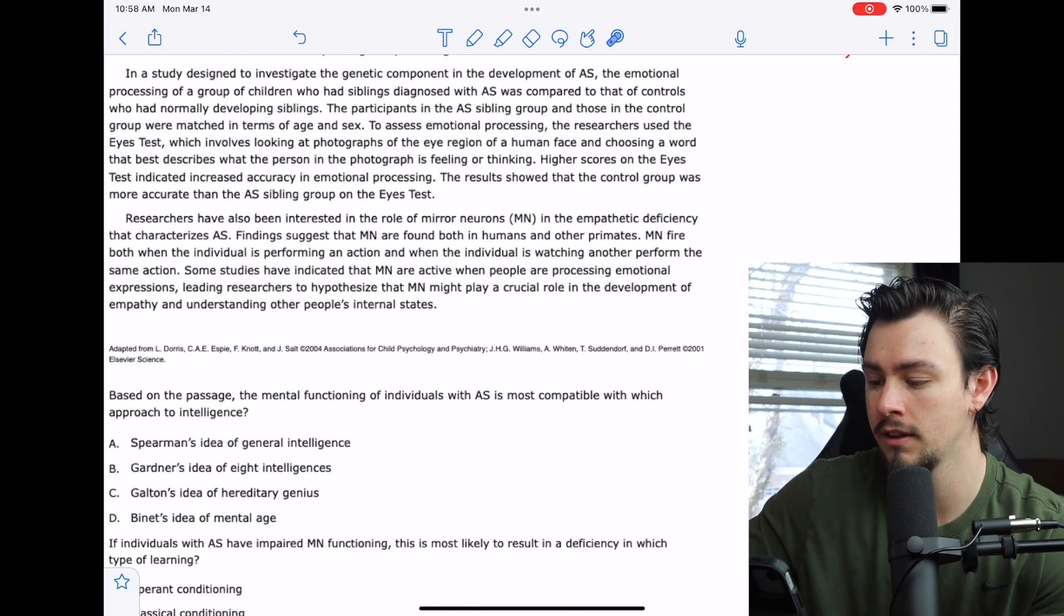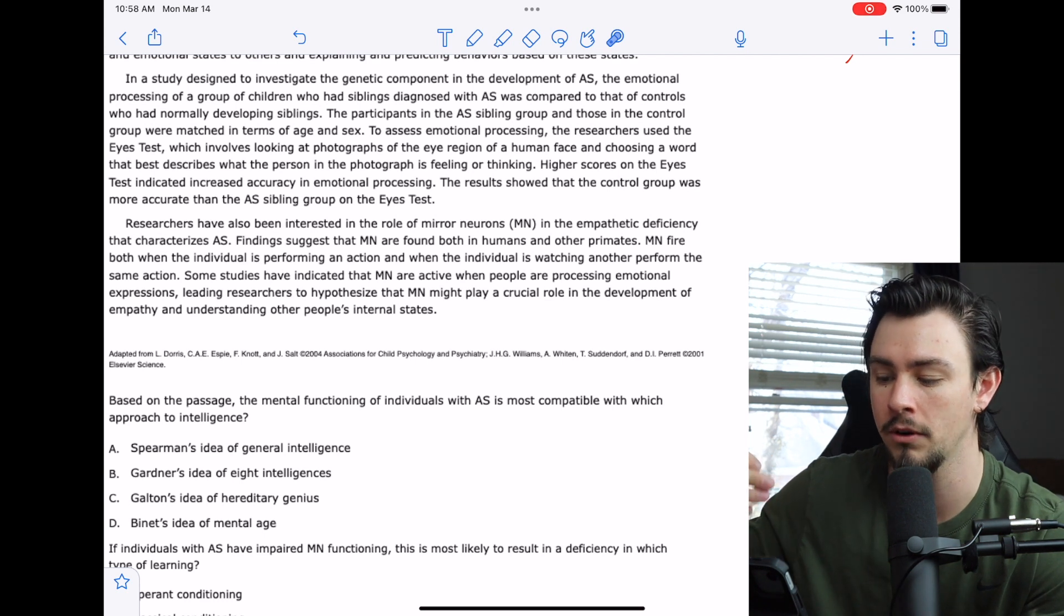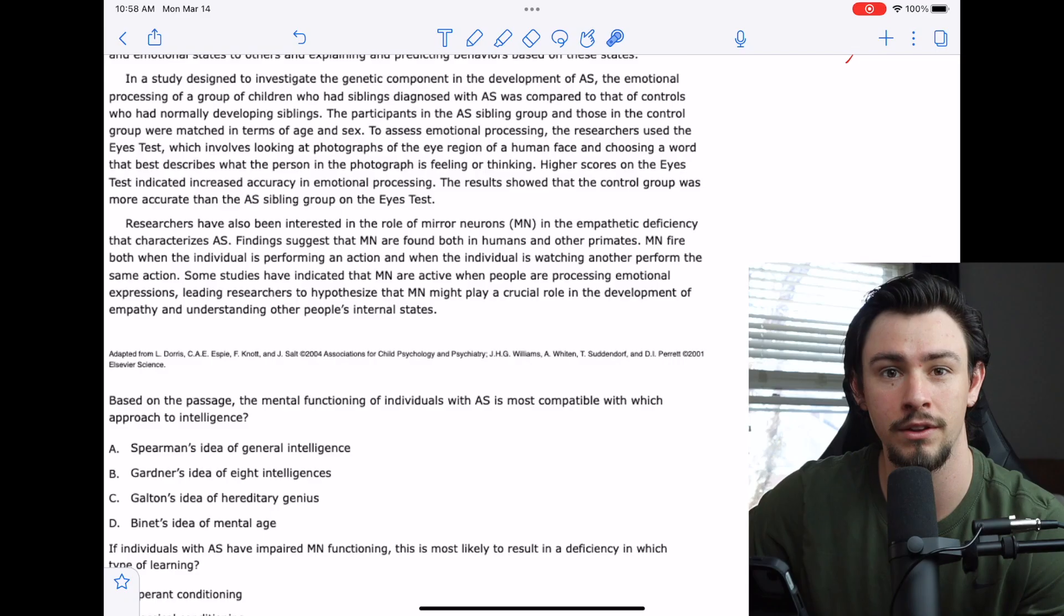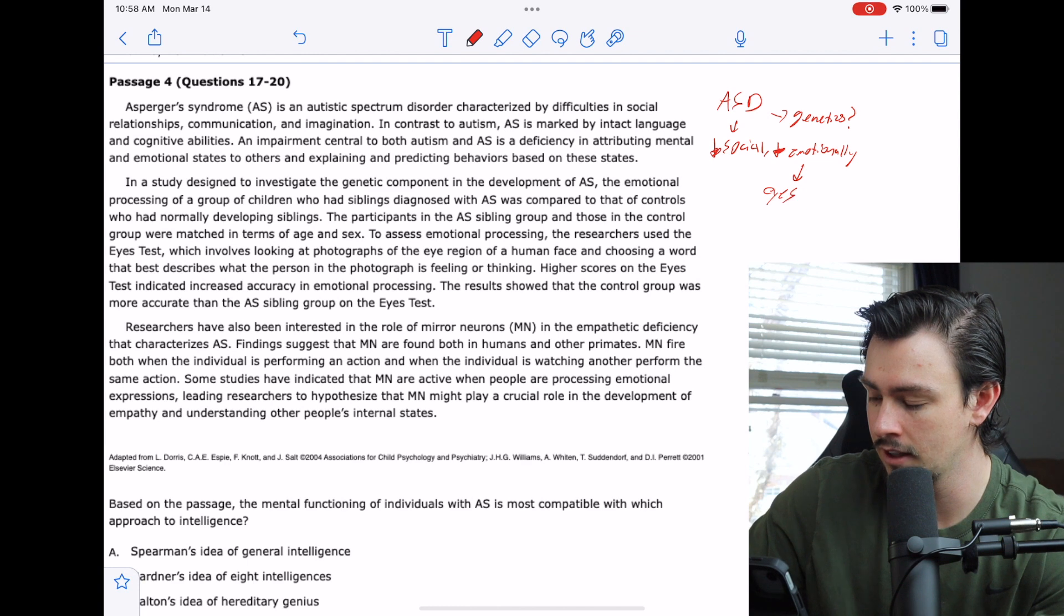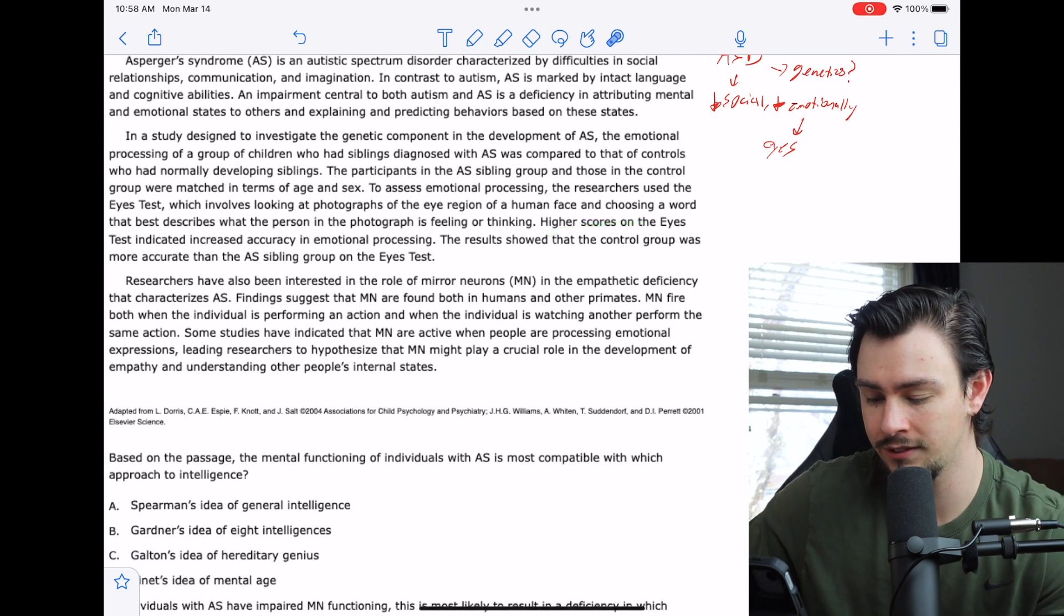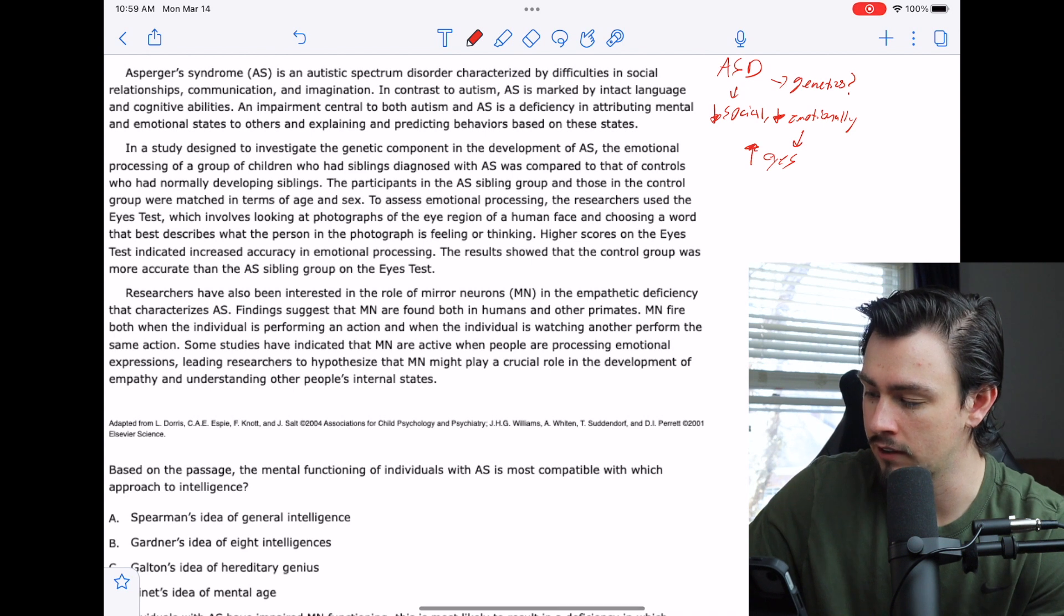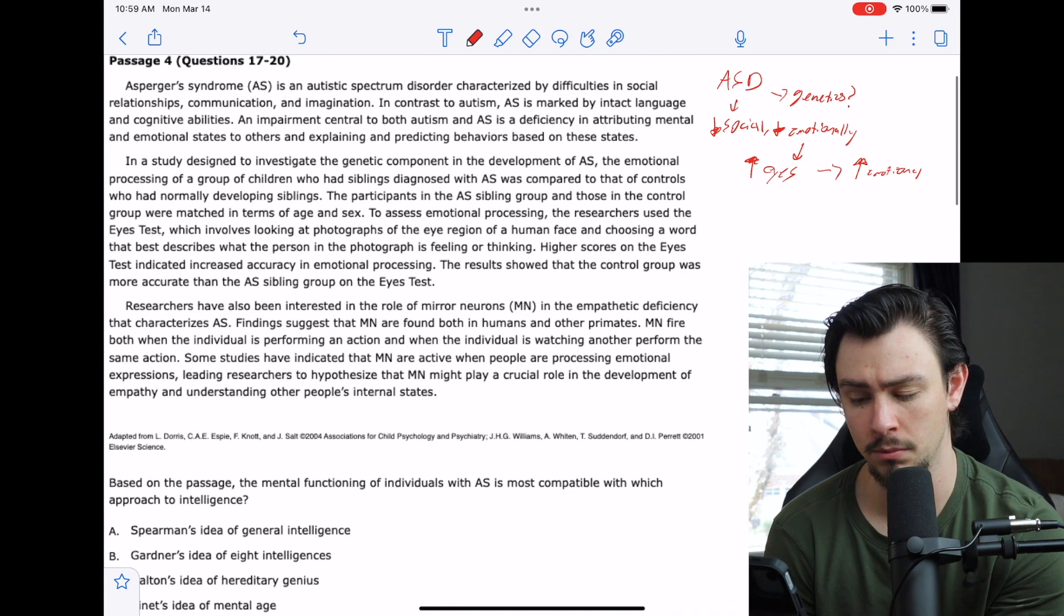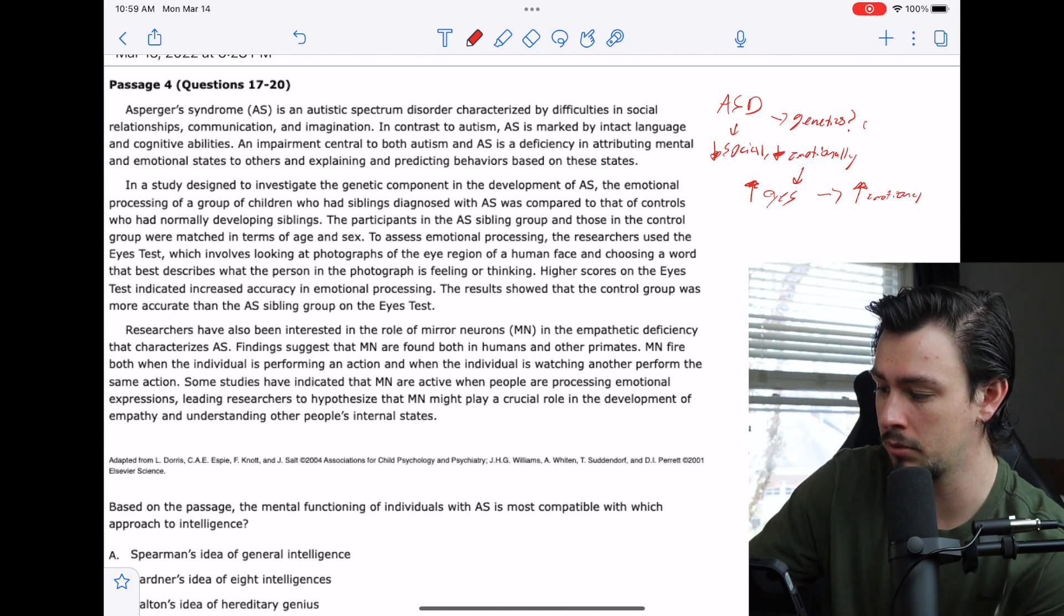To assess emotional processing, the researchers use the eyes test, which involves looking at photographs of the eye region of a human face and choosing a word that best describes what the person in the photograph is feeling or thinking. High scores on this test indicate increased accuracy in emotional processing. The results showed that the control group was more accurate than the Asperger's sibling group on the eyes test, so it shows that there is a little bit of a genetic component here.